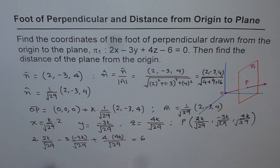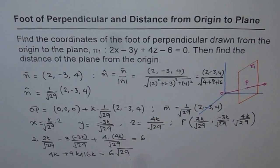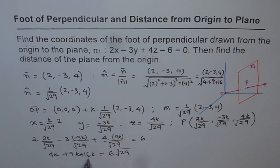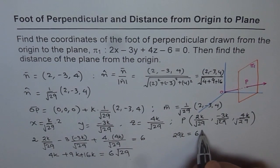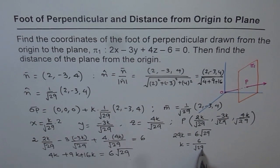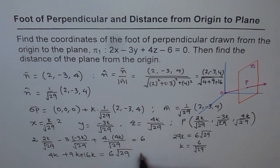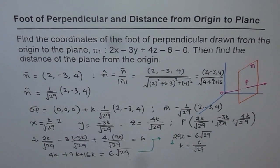Expanding: 2×2 gives 4K, -3×(-3) gives +9K, and 4×4 gives 16K, all over √29, equals 6. So (4 + 9 + 16)K/√29 = 6, which gives 29K/√29 = 6, so 29K = 6√29. Therefore K = 6/√29.